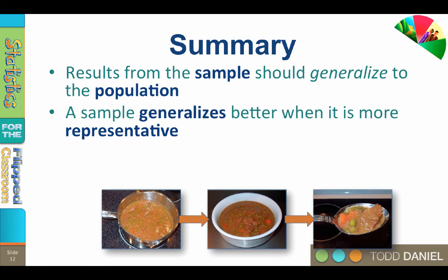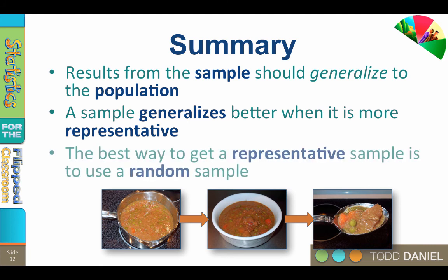We only need a little taste to know if the stew needs more salt. Of course, if your spoonful lacks carrots, you cannot answer whether carrots are fully cooked from your non-representative spoonful. The best way to get a representative sample is from a random sample — stir the pot first so all elements have an equal probability of being selected. However, because a random sample can still be non-representative, we need inferential statistics to determine how well our sample represents our population.